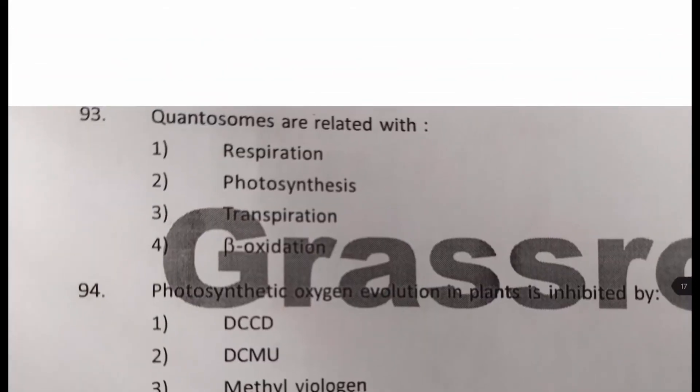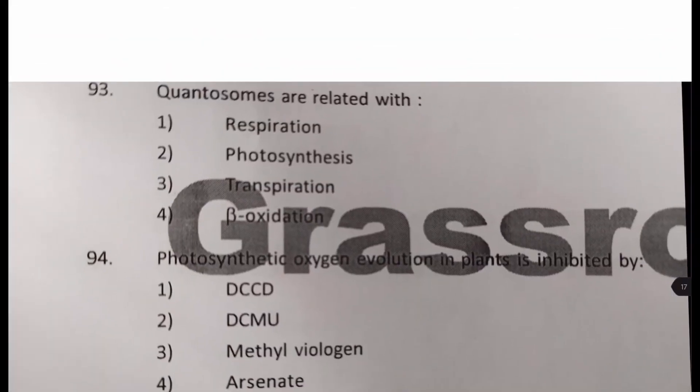Next question. Quantosomes are related with, what is it respiration, photosynthesis, transpiration, or beta-oxidation? Well, quantosomes are particles which are found where? In the thylakoid membrane. To do what? They consist of the chloroplast and where the photosynthesis takes place.